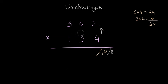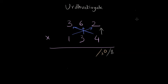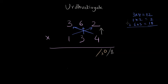The next step is Urdhva Thiryak, where we multiply three times four, which is 12, then one times two, which is two, and six times three, which is 18. Adding all these multiplications, the result is 32. We write two and a small three as the carry for the next result.